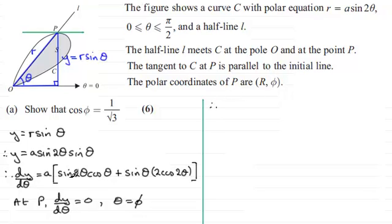We've therefore got that this factor in here must be equal to 0. So we've got sin 2φ cos φ plus, and then if I tidy this up, just put the 2 at the front, we've got plus 2 sin φ and then cos 2φ, and that's going to equal 0.